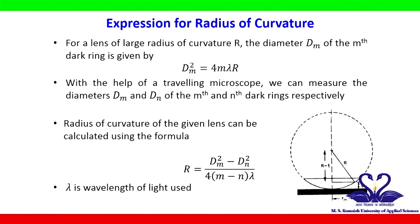Diameters dm and dn of the m-th and n-th dark rings respectively can be measured using a travelling microscope. The radius of curvature of the given plano-convex lens can be determined using the formula as shown.